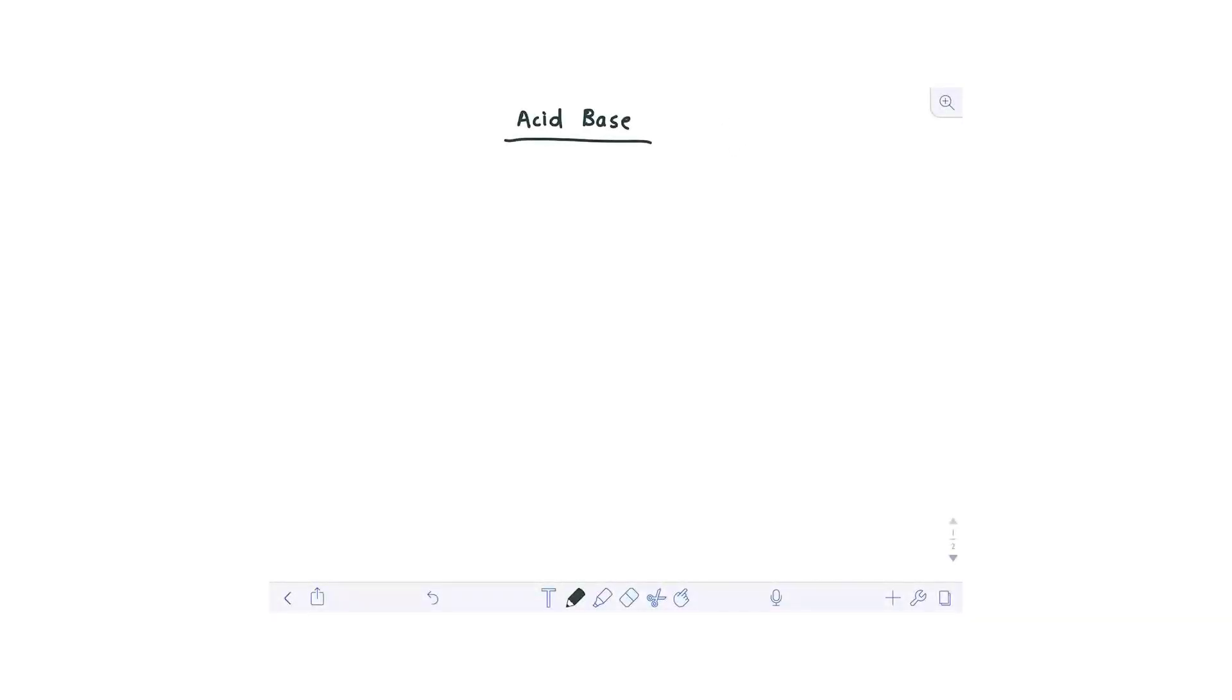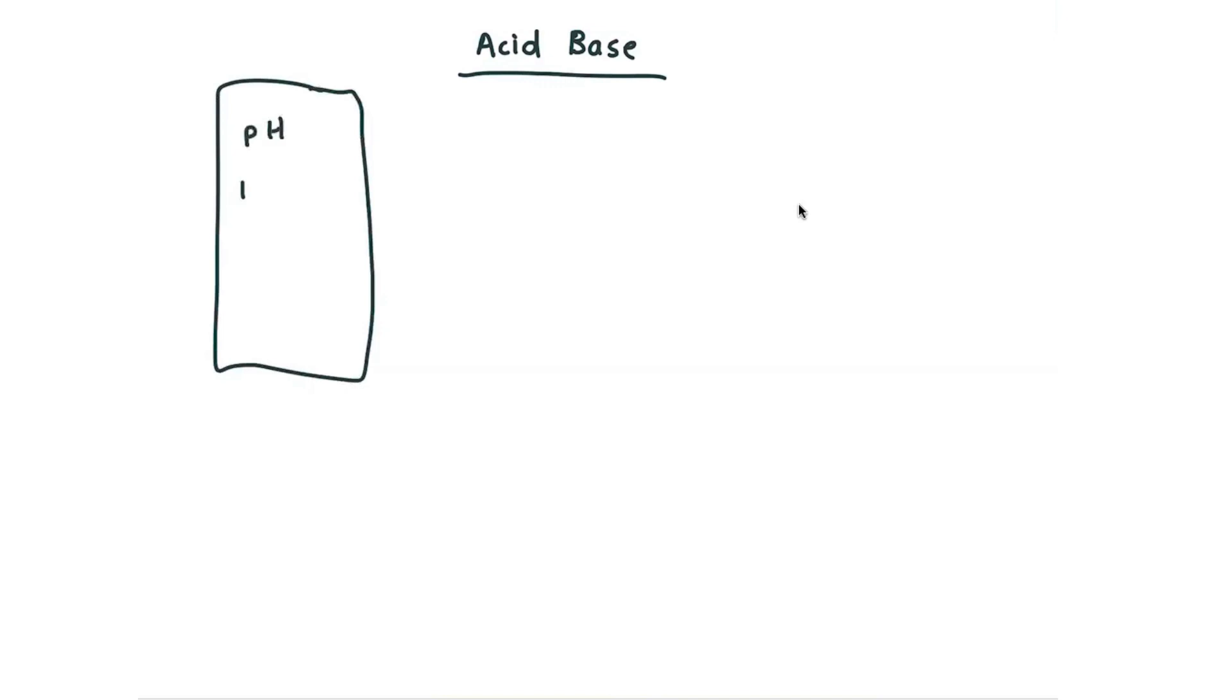Systematic approach on how to actually approach acid-base questions on your exam. When you're talking about an acid-base question, let's understand the structure first. When you're given an acid-base question, they typically give you the pH, they give you the PCO2, they give you the PO2, and they give you the bicarb.